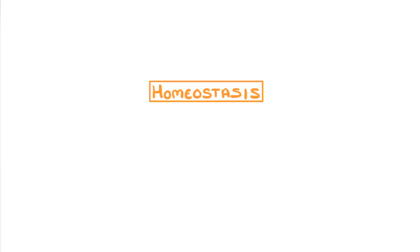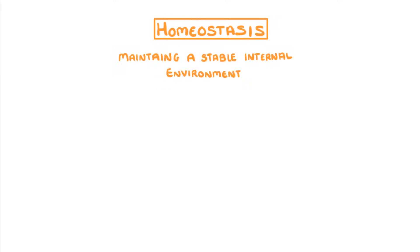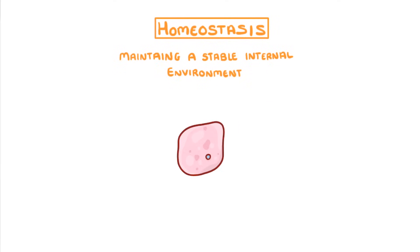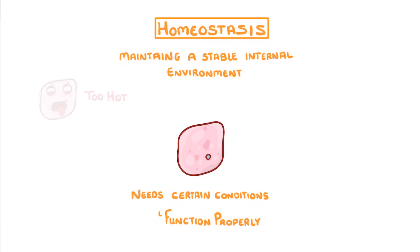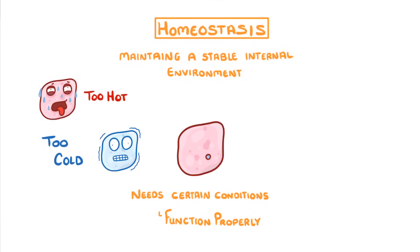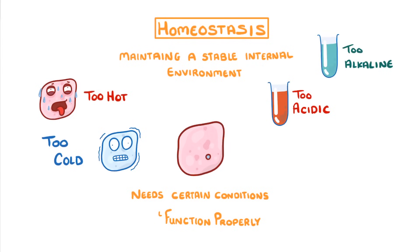In this video we're going to look at homeostasis, which can seem complicated, but really it's just a process of maintaining a stable internal environment. If you think about one of the cells in your body, it needs certain conditions for it to be able to function properly. For example, it can't be too hot or too cold, it can't be too acidic or too alkaline, and it's going to need a good supply of things like glucose and water.